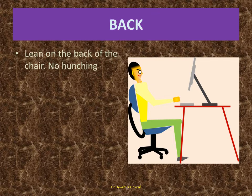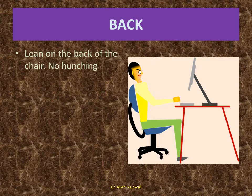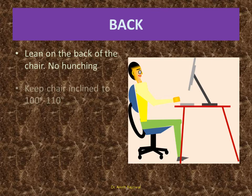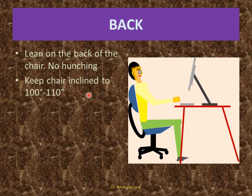Back: Lean on the back of the chair, no hunching. You can see here leaning on the back, no hunching. Keep chair inclined around 100 to 110 degrees. You can see this part is a bit inclined, not vertical.